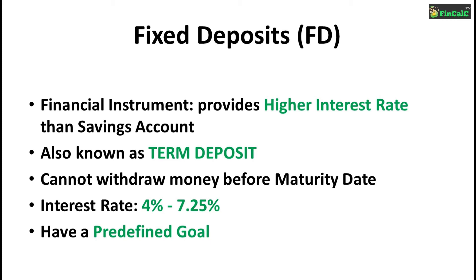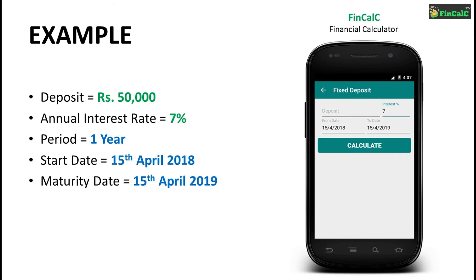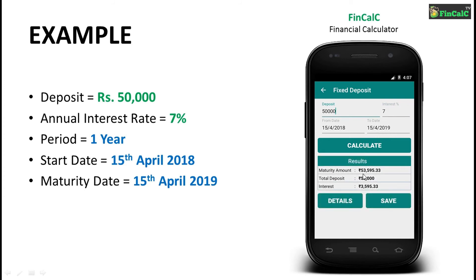Let's see how interest is calculated with the help of an example using the free Android app Finkelsey. As you can see, we need to provide deposit amount, expected interest rate, and the tenure period for a fixed deposit. For a deposit of Rs. 50,000, an annual interest rate of 7%, and a period of 1 year, we get an approximate maturity amount of Rs. 53,595.33. That means for a deposit of Rs. 50,000 for 1 year, we earn interest of Rs. 3,595.33 based on an annual interest rate of 7%.